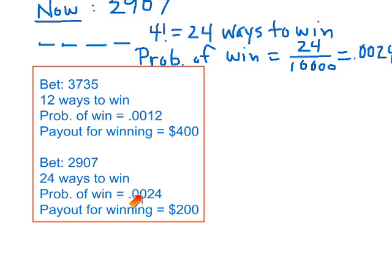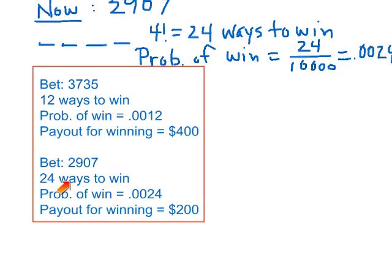Of course, the folks who run the lottery know that, so what they do is cut the payout in half. When there were twelve ways to win the payout is four hundred dollars; when there are twenty-four ways to win the payout is only two hundred dollars.